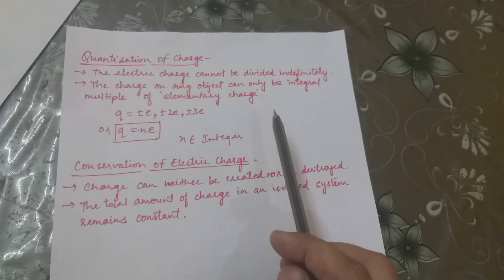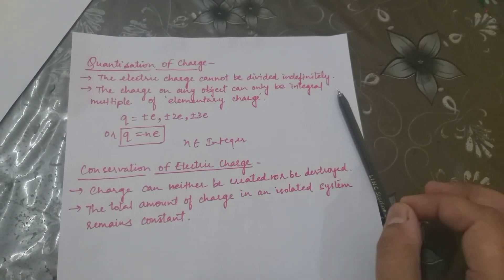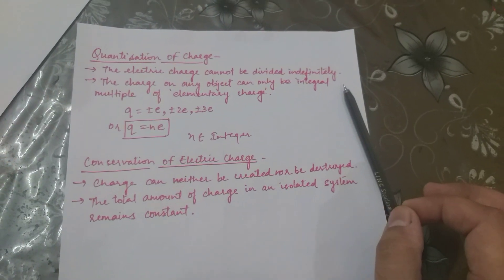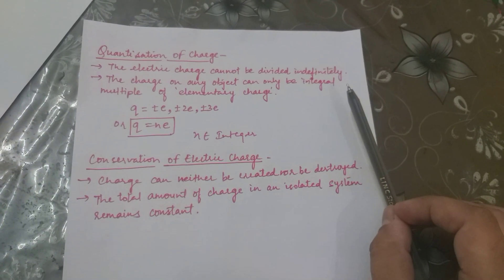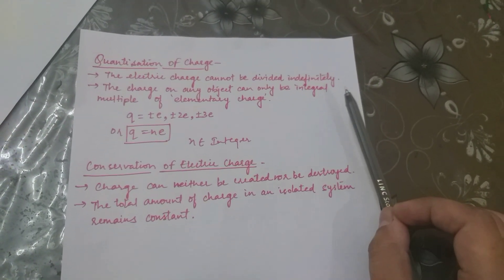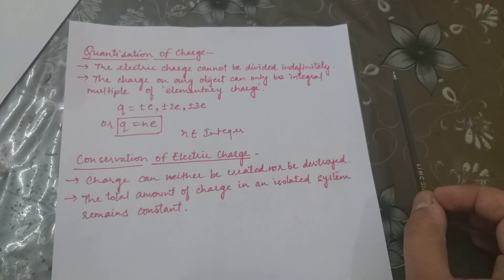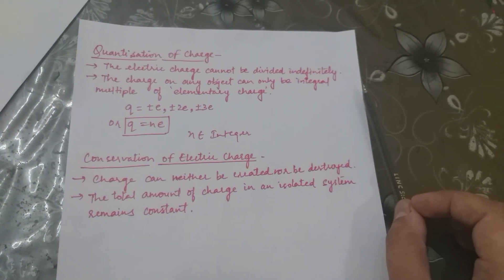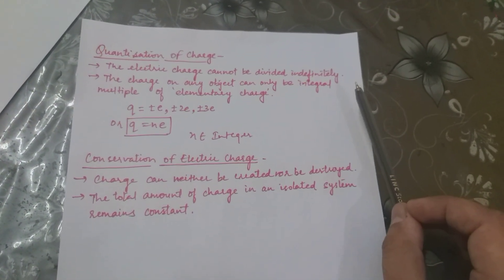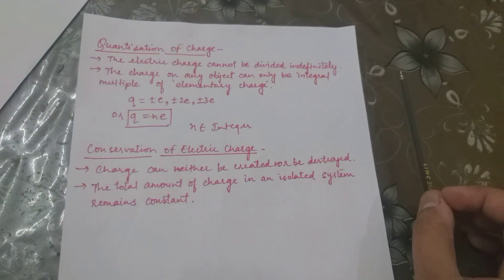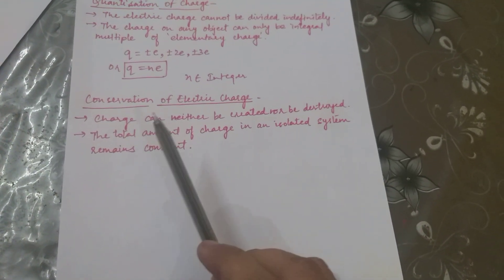This is because charge can only be produced due to the transfer of electrons, and electrons can only be transferred in whole numbers — one, two, three, four, and so on. We cannot transfer electrons in fractions. That is why the net amount of charge on any object can only be an integral multiple of the elementary charge.